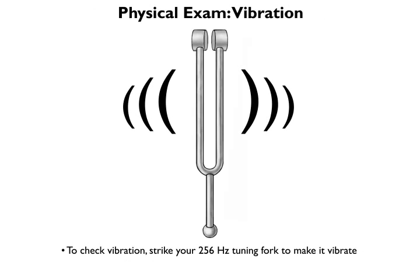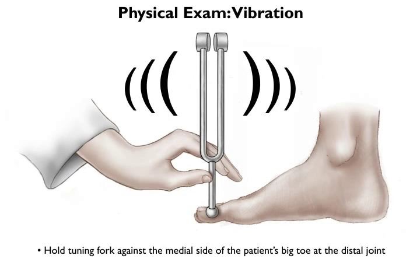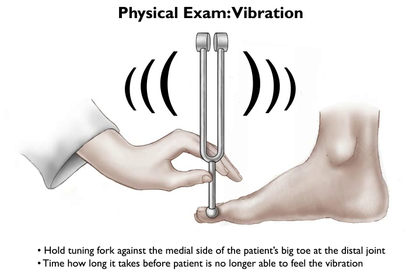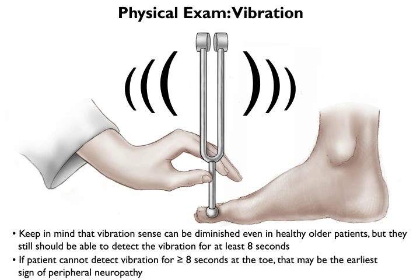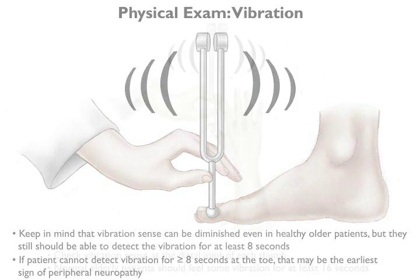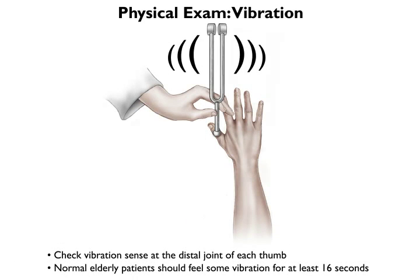To check vibration, strike your tuning fork to make it vibrate. Then hold the tuning fork against the medial side of the patient's big toe at the distal joint. Time how long it takes before he is no longer able to feel the vibration. Keep in mind that vibration sense can be diminished even in healthy older patients, but they still should be able to feel the vibration for about 8 seconds. If they don't, that may be the earliest sign of peripheral neuropathy. Then do the same thing at the distal joint of the thumb. Normal elderly patients should feel some vibration for around 16 seconds.